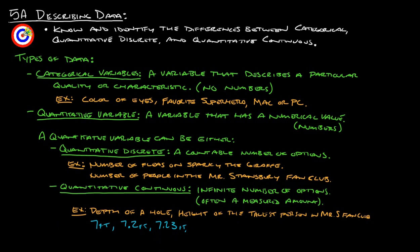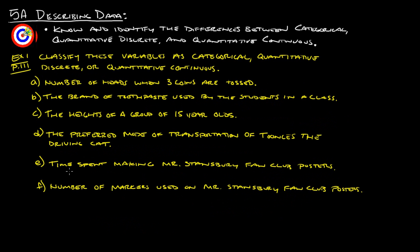Let's take a look at some examples and see what we come up with. Here are our examples. Classify these variables as categorical, quantitative discrete, or quantitative continuous. Feel free to pause this at this point and try to figure this out on your own and then come and start it back up and see if you got the same thing that we did.